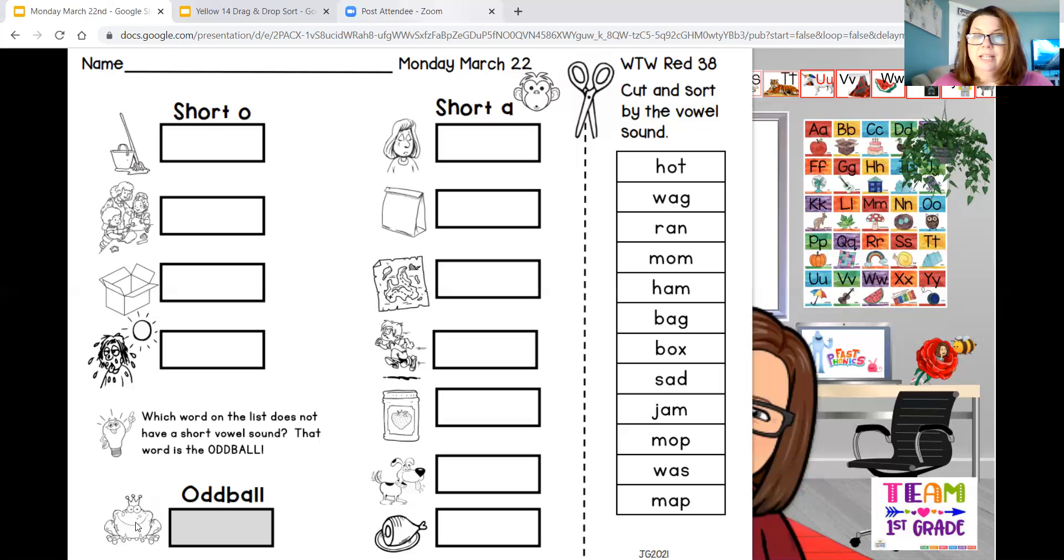And the last word on our list is map, M-A-P. What do we need a map for? Well, if we get lost, we can always look at a map and find our way home, right? That's that short A sound. All these CVC words, except for was, follow that rule. We have the short O or the short A sound. So that's what our list is all about this week: short A, short O, and then we have that one oddball, was, W-A-S.